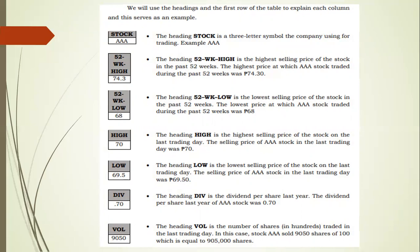The heading '52WK High' is the highest selling price of the stock in the past 52 weeks. The highest price at which AAA stock traded during the past 52 weeks was 74 pesos and 30 centavos. The heading '52WK Low' is the lowest selling price in the past 52 weeks; for AAA stock that was 68 pesos.